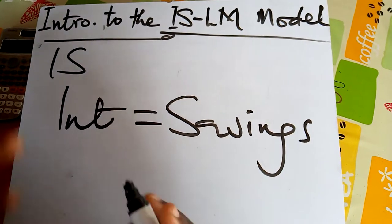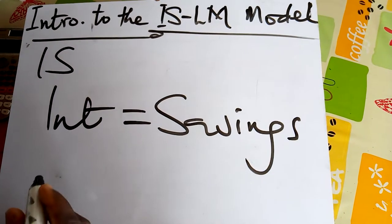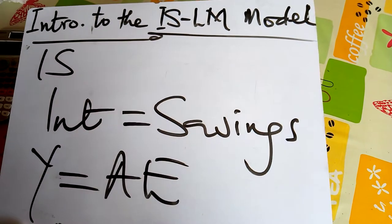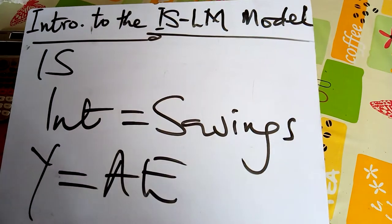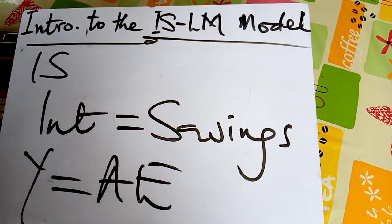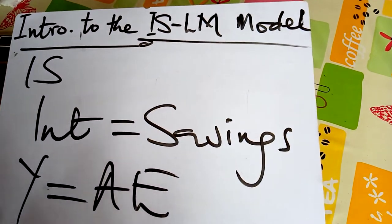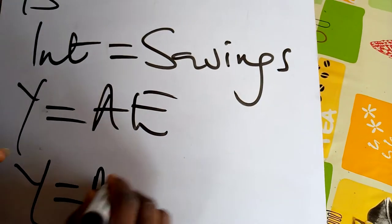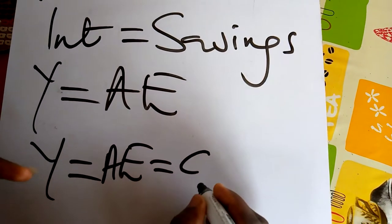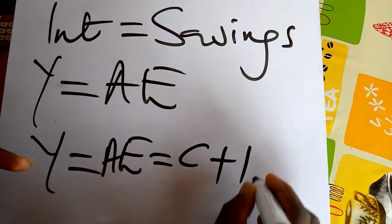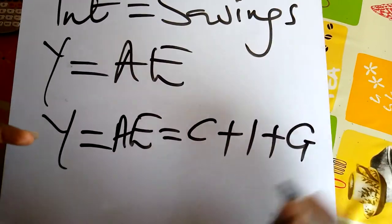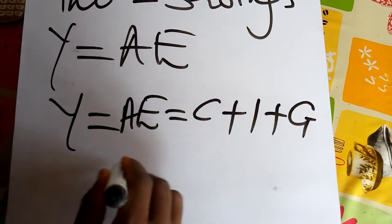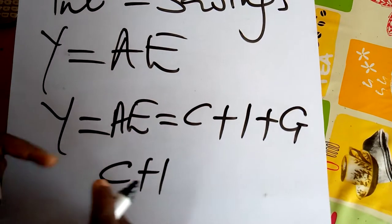Since IS represents demand, whatever income you have it's assumed that you spend all of it, so your income should be equal to your aggregate expenditure. Since income equals aggregate expenditure, we know that Y equals aggregate expenditure, which equals consumption plus investment plus G, where G is government spending.